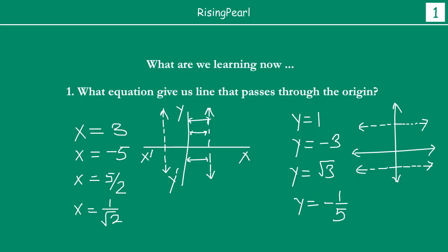Today we will talk about a special kind of line equations that actually give us a line passing through the origin. The origin is basically where the two coordinate axes intersect. So today we will discuss: is there a special type of equation which gives us a line that passes through the origin?